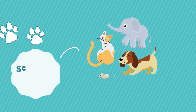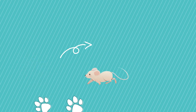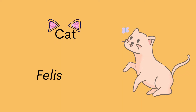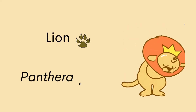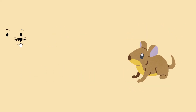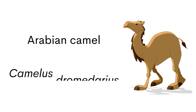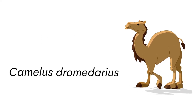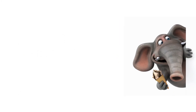Now let us know the scientific names of some common animals. Cat: Felis catus. Dog: Canis familiaris. Lion: Panthera leo. Mouse: Mus musculus. Arabian camel: Camelus dromedarius. Cow: Bos taurus. African forest elephant: Loxodonta cyclotis.